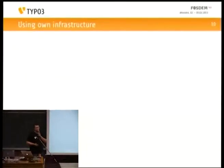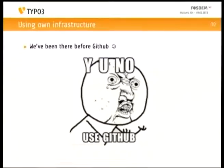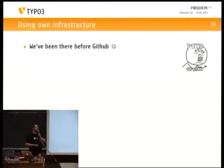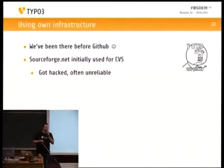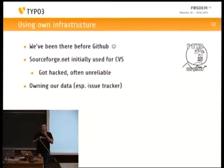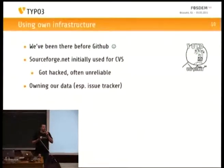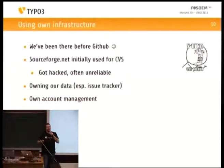You might also ask why are you using your own infrastructure and why don't you use GitHub? Of course, often people think about just migrating to GitHub. But one reason is we have been there before there was GitHub. In the beginning when TYPO3 was smaller, SourceForge was used for CVS hosting — it started being hacked and was sometimes unreliable. In the subversion times everything was started on own infrastructure. The most important point is that we own our data. We were also able to switch the issue tracker like one year ago because we have access to all data, and we have our own account management with all the teams.